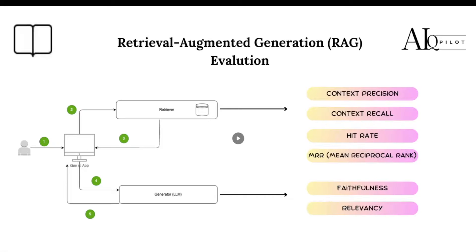As mentioned, RAG has two main components: retriever and generator. If we want to talk about the evaluation, we need to be able to evaluate the output of these two components. To better understand how a RAG system works, let's talk about the workflow that you can see here. This is the whole workflow — we usually have a Generative AI application that is supported by the RAG system, and as I said, RAG has two main components: retriever and generator.